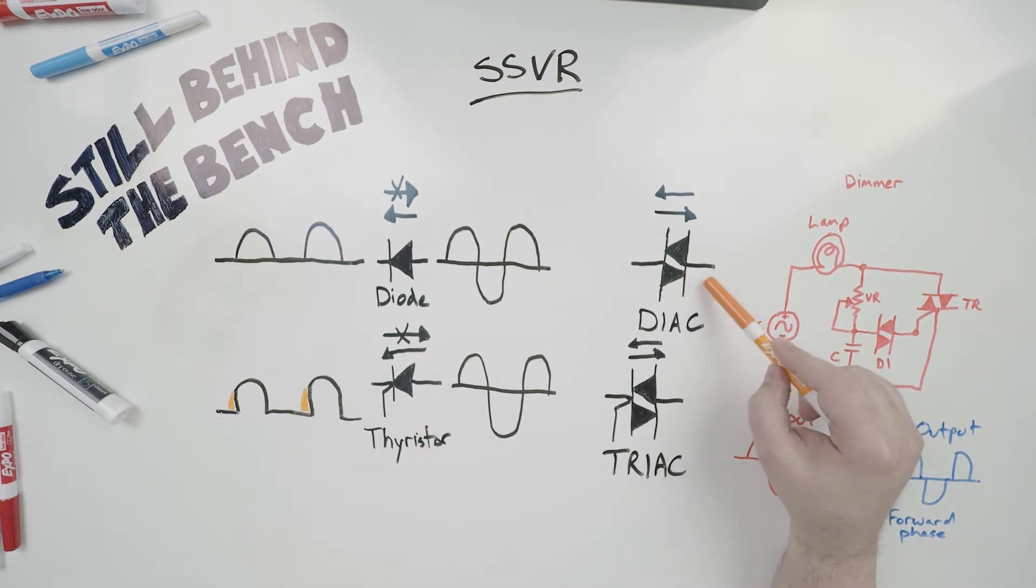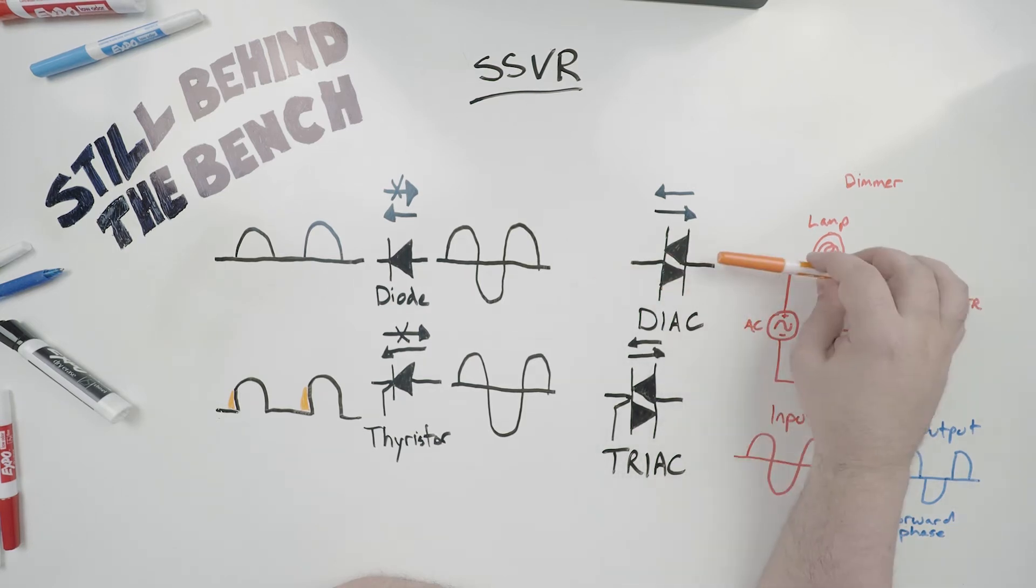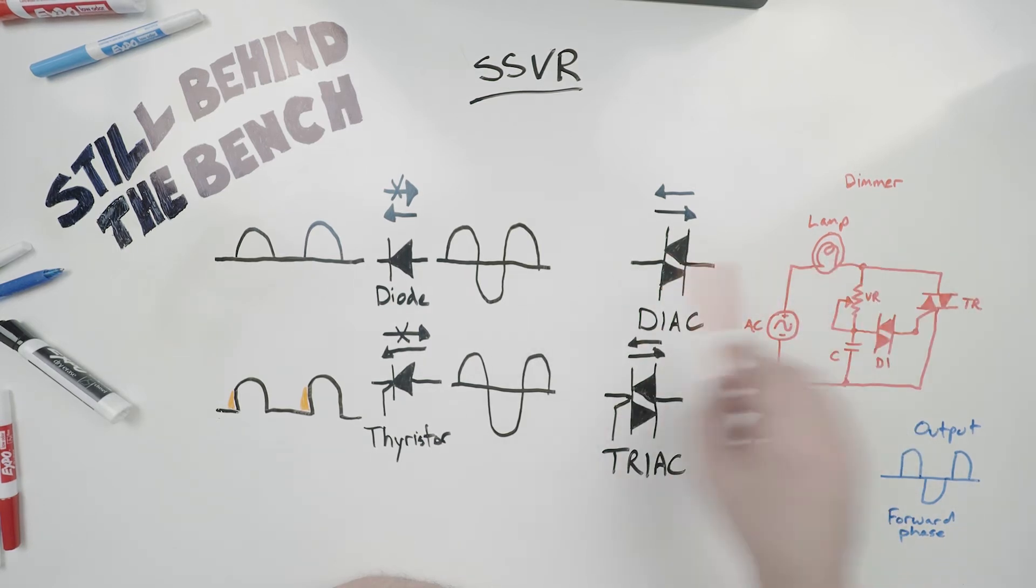Then we have the DIAC. This is like a pressure safety valve. It will only start conducting once the voltage on either side is at what is called its breakthrough voltage.